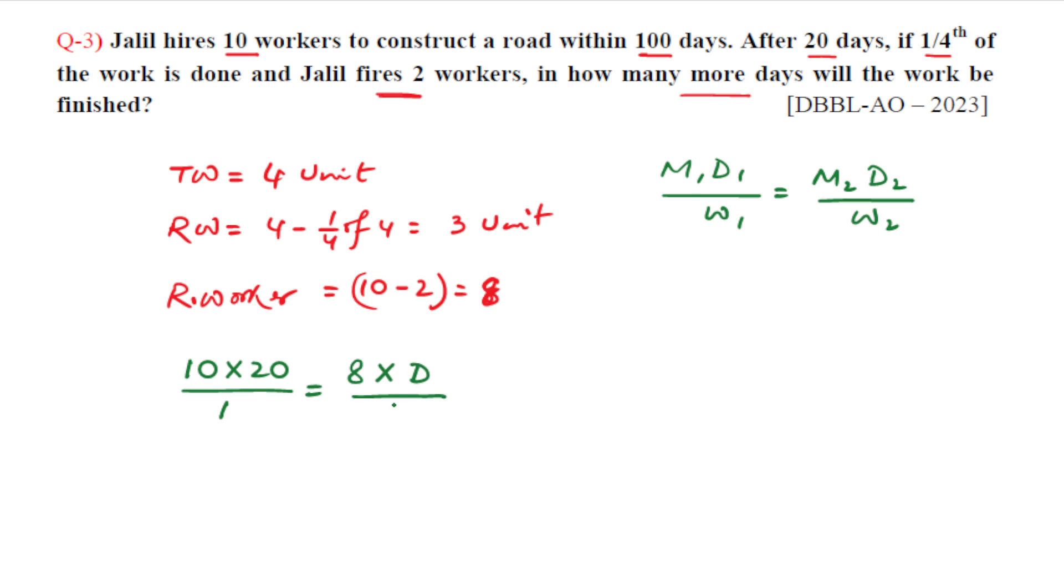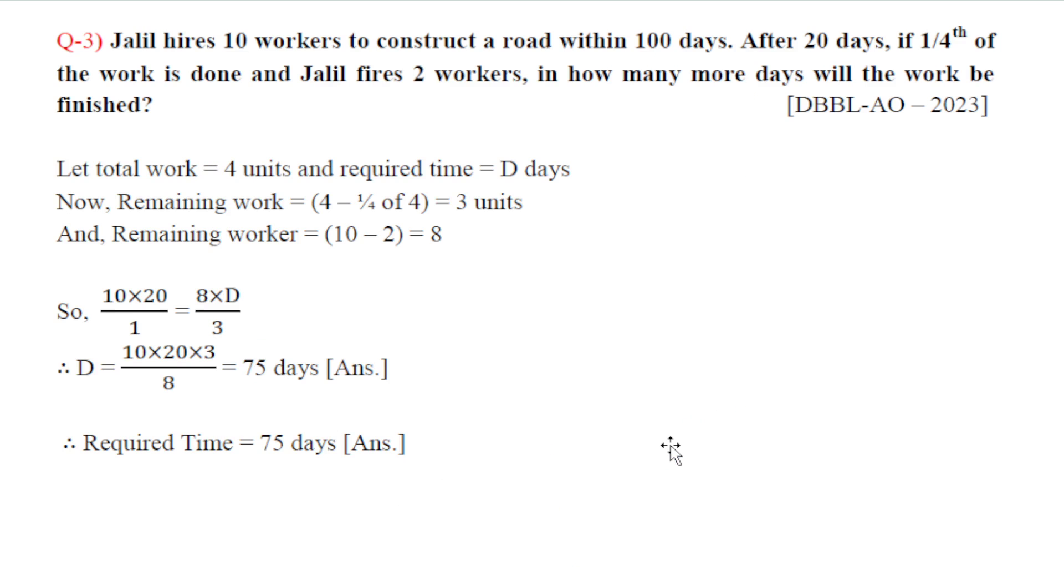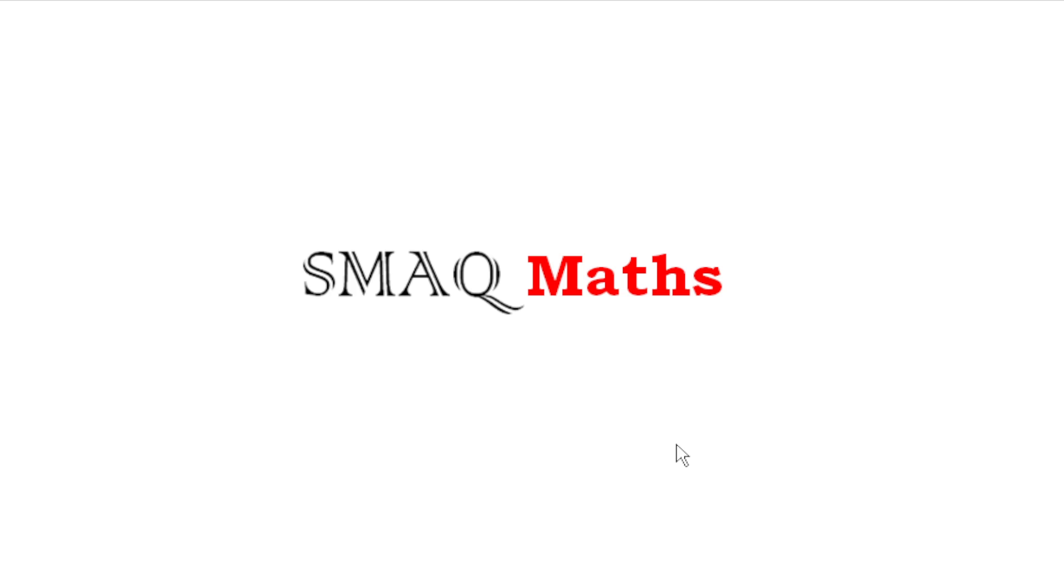So 10 times 20 divided by 1 equals 8 times D divided by 3. Therefore D equals 10 times 20 times 3 divided by 8, which gives us 75 days. The remaining work will be finished in 75 days. This is the solution to question number three.